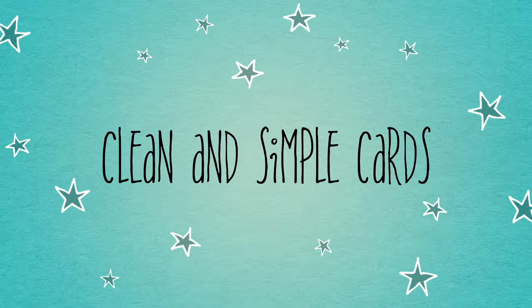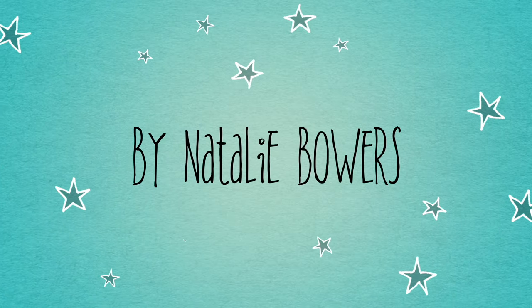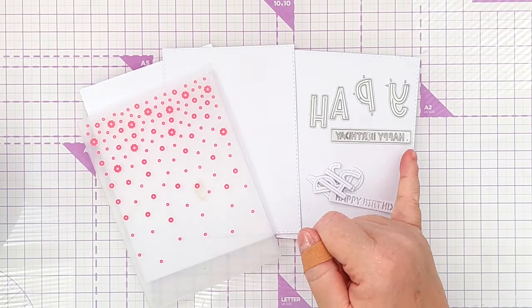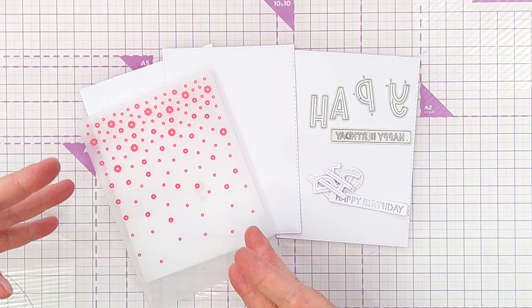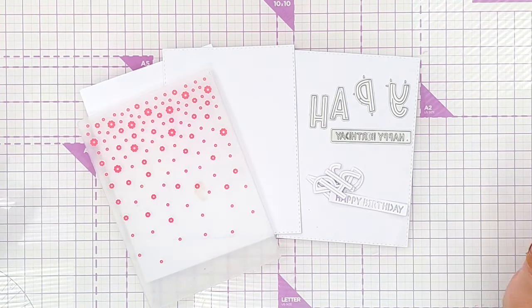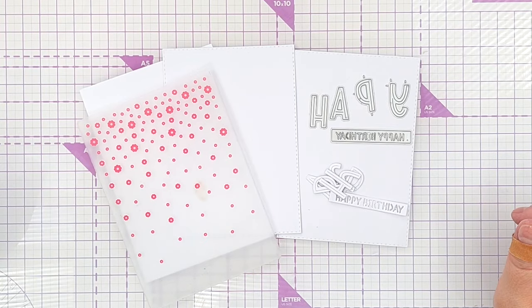Hello crafty friends. Welcome to today's clean and simple card making video. Today I'm going to use these alphabet dies, a happy birthday sentiment die, a flowery embossing folder and some other bits and bobs to make a happy birthday card for you.